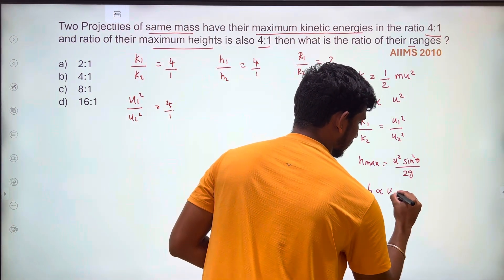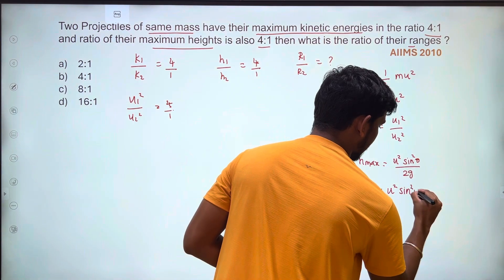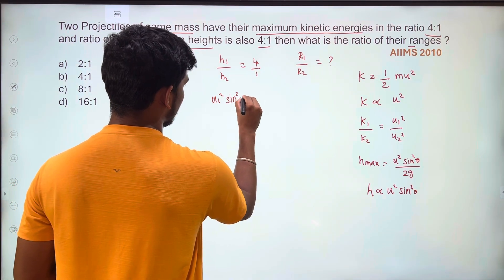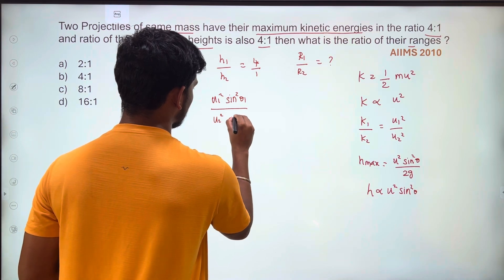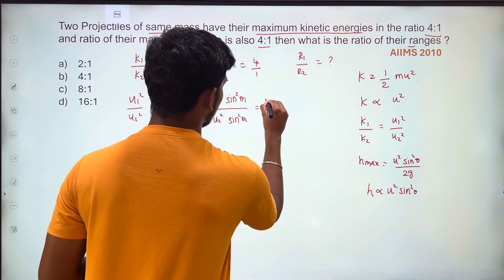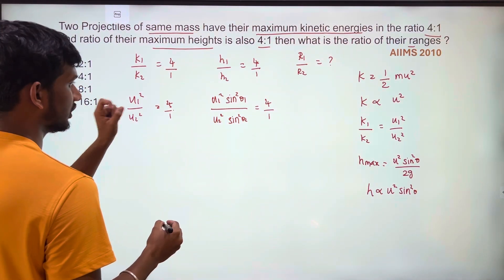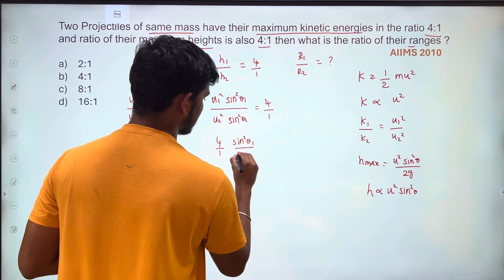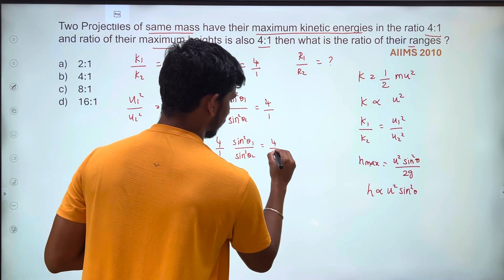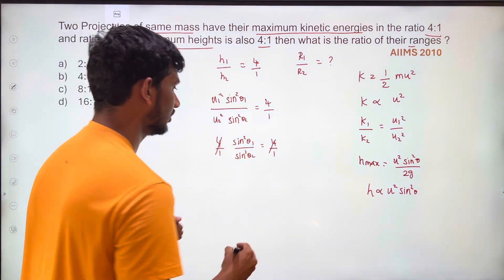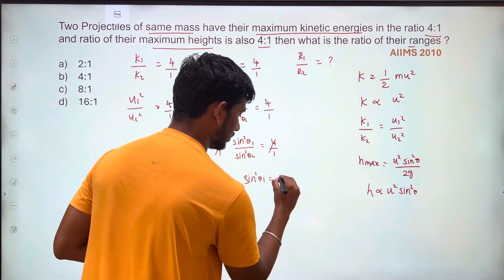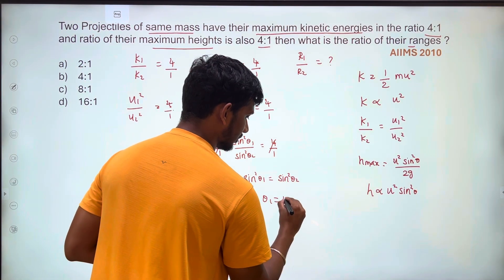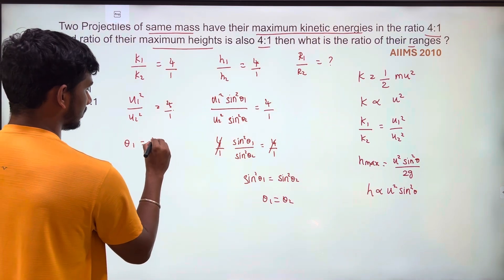For maximum height, the formula is H_max = u squared sin squared theta divided by 2g. Applying the ratios, u1 squared sin squared theta1 by u2 squared sin squared theta2 equals 4 by 1. Since u1 squared by u2 squared is already 4 by 1, these cancel, giving sin squared theta1 equals sin squared theta2, so theta1 equals theta2.